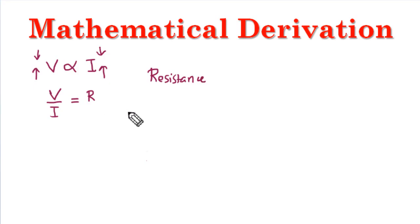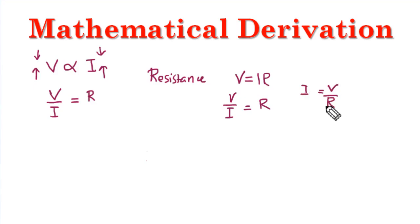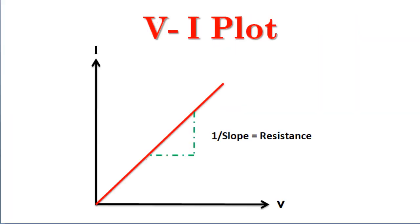This identity is very important in electronics and electrical circuits. We normally write it as V equals I times R. It has other forms: V divided by I equals R, or I equals V divided by R. These are the different forms of the mathematical expression of Ohm's law, V = IR.